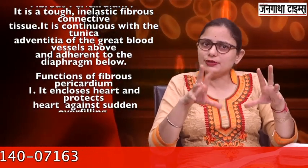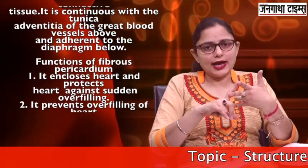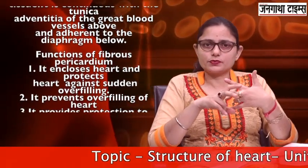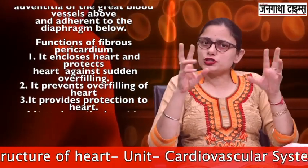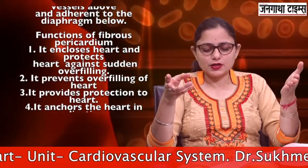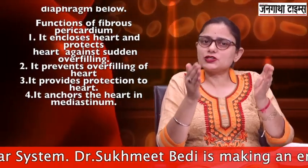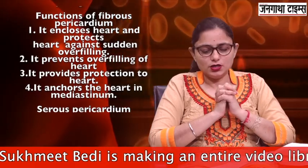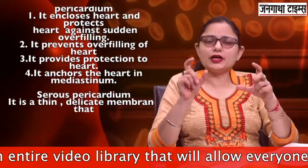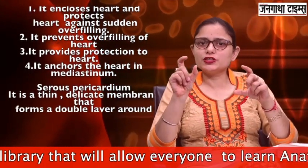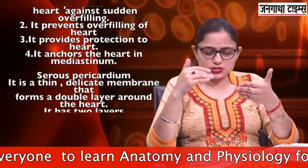The second layer is the serous pericardium. It is a thin and more delicate membrane and it forms a double layer around the heart. The outer one is the parietal layer, which is fused to the fibrous pericardium. The inner layer is the visceral layer, which is adherent or attached to the surface of the heart. This inner visceral layer is also called the epicardium. The epicardium is an integral part of the heart wall.